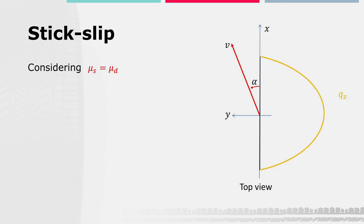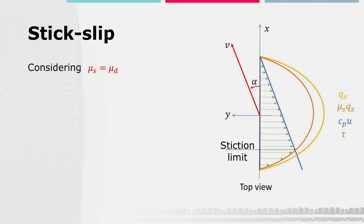We can represent graphically the contact pressure qz in yellow, the static friction limit shear stress in orange, the elastic shear stress in blue, the effective stress in green. The stick limit is identified when the elastic stress becomes equal to the static friction limit.